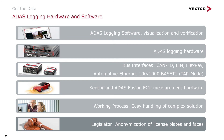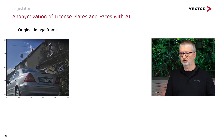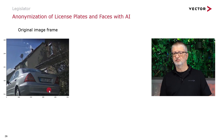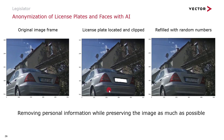The last topic is legislator rules: we must anonymize license plates and faces. Doing this manually by humans would be a nightmare. I want to show you how it can be done by an AI system. Here you have the original image frame — you can see the license plate. The AI algorithm detects and localizes the plate, clips it out, and refills it with random numbers. Something similar can be done for faces. This is not just a product — we need to discuss in detail how to use it, and I'm sure we'll find a solution for you.